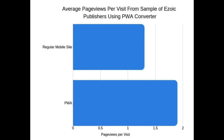As you can see by a study we conducted, the average page views per visit from a sample of Ezoic publishers using our PWA converter were higher with a PWA in place. This could be because of the speed between pages, the responsiveness of the design, or that users can access the website from their home screen. However, as stated before, speed is a micro part of ranking with Google. Overall visitor experience is the key to proper SEO.